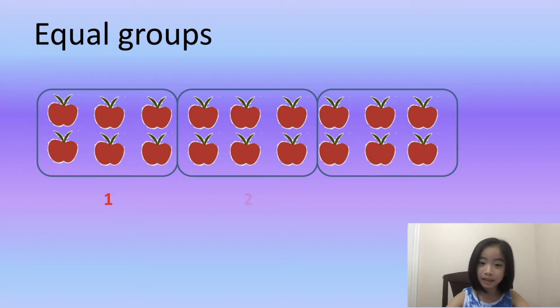Here I have one group, two groups, and three groups. So, I have three groups of six. Three sixes equals six plus six plus six equals eighteen.